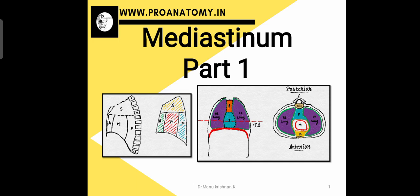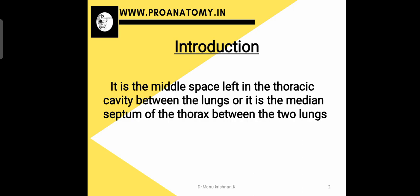Here in this diagrammatic representation, you can find the right and left lung which is colored in purple, and you can see a potential space which is colored in orange and blue. That potential space which exists between the two lungs is termed as the mediastinum. It is the middle space left in the thoracic cavity between the two lungs, or it is the median septum or separation of the thorax between the two lungs.